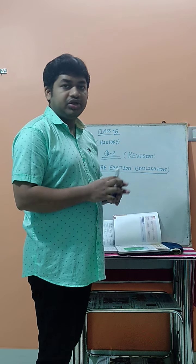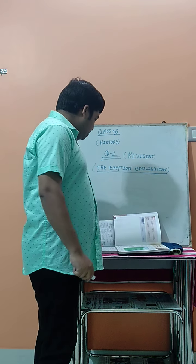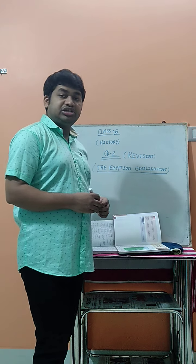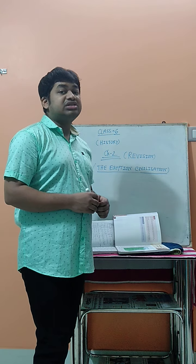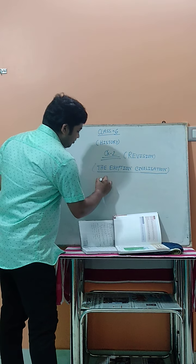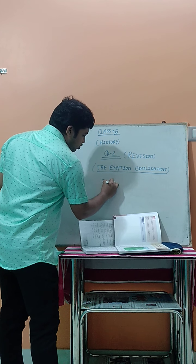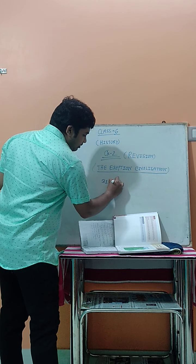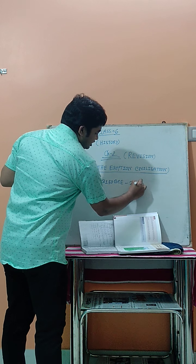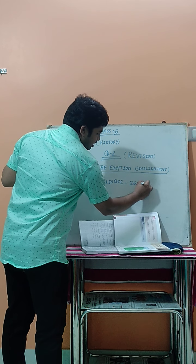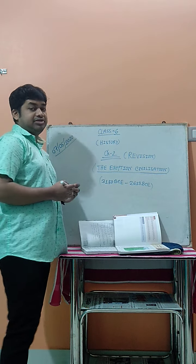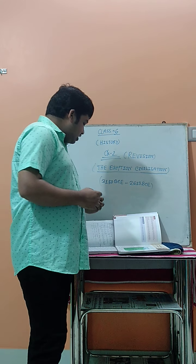The second question is: what is the duration of time for the establishment of the Egyptian civilization? The Egyptian civilization was established from 3150 BCE to 2613 BCE. That is the duration of time when the Egyptian civilization was established.